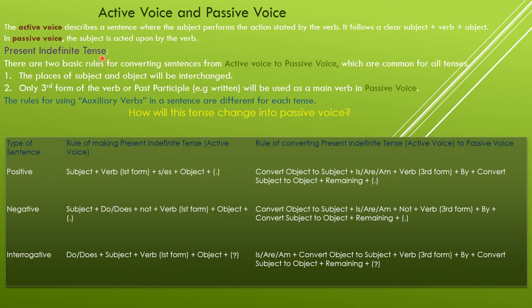Before discussing the present indefinite tense, we must look at the transition — the rules for converting sentences from active voice to passive voice. There are two basic rules common for all tenses. First, the places of subject and object will be interchanged. Second, only the third form of the verb, or past participle (e.g., 'written'), will be used as the main verb in passive voice. The rules for auxiliary verbs are different for each tense.